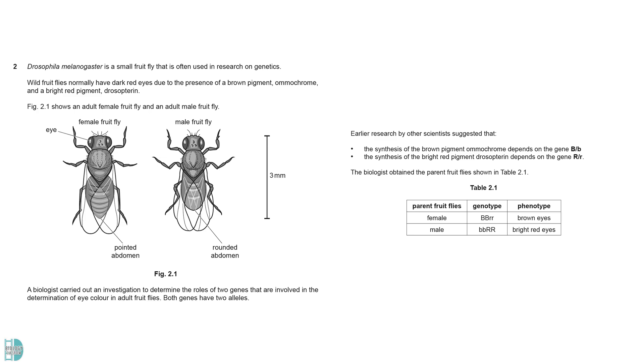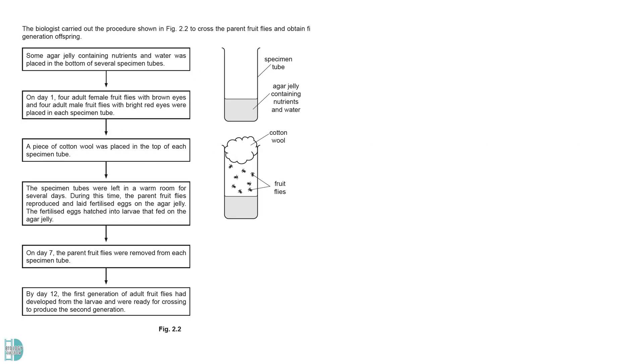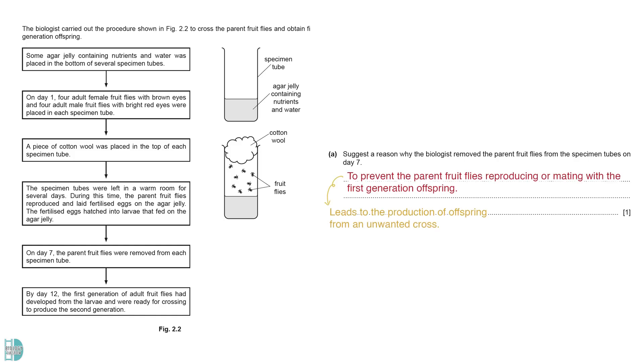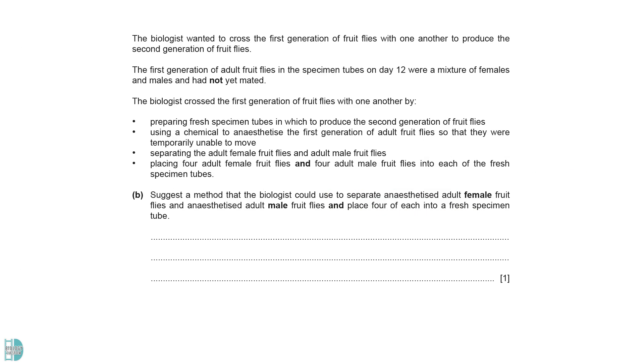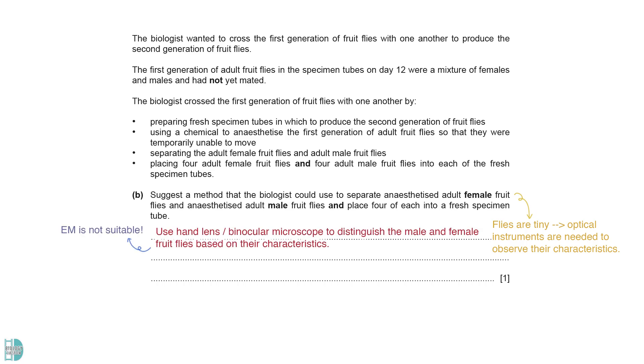Question 2 shows the fruit flies and the two genes involved in determining their eye color. Figure 2.2 illustrates the breeding test used to cross individuals with specific phenotypes. The parent fruit flies from the specimen tubes should be removed because they may reproduce with their offspring once they mature. This will lead to the production of offspring from an unwanted cross. Next, we have some information about crossing the first generation flies to obtain the second generation. Flies are tiny, so it is challenging to observe their characteristics without the aid of an optical instrument. A hand lens or a binocular microscope can be used to distinguish the male and female fruit flies. Note that an electron microscope is not suitable for this purpose. We can use a pen, brush or forceps to place them into the tube. We should not do it by hand as they can be easily squashed and killed.